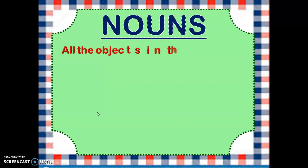All the objects in this world have a name. For example, you are going to a toy shop and you are asking the shopkeeper to give you a ball and a bat, but you don't know how to name them. So if you will say 'I want this or that,' the shopkeeper won't be able to understand anything. So for that purpose, all the things in this world have been assigned a name, so you can easily go and ask the shopkeeper to give you a ball or a bat.